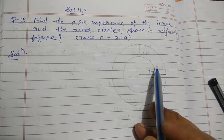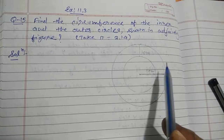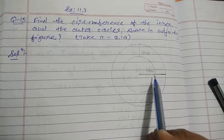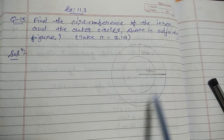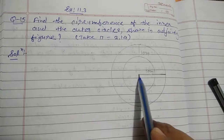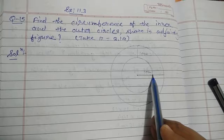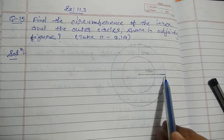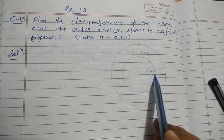Here we can see that two circles are given — one is outer and one is inner circle — and we have to find the circumference of these circles using their radius. The outer circle radius is 19 meters. For the inner circle, the distance between the circular regions of the circles is given as 10 meters.